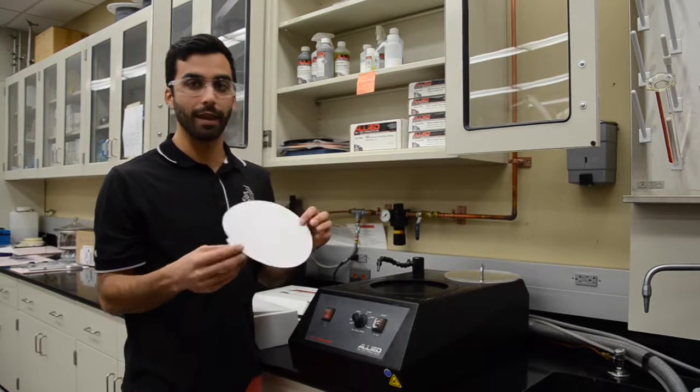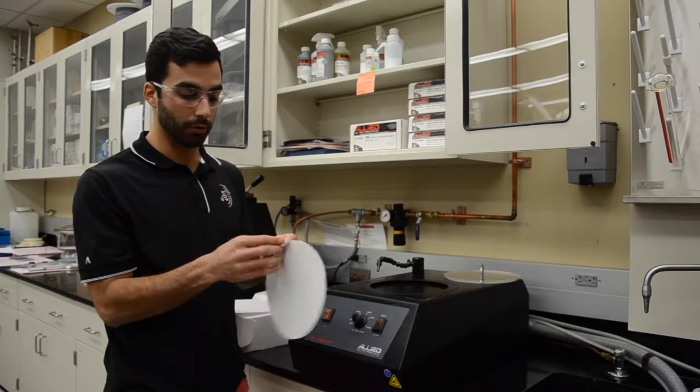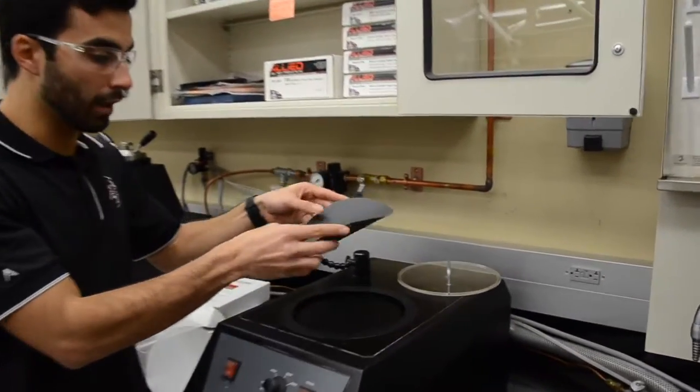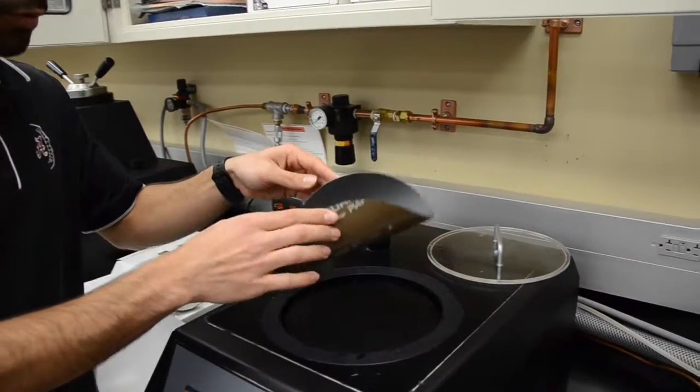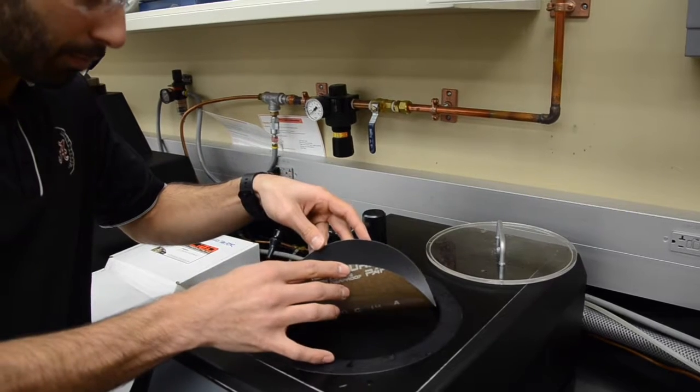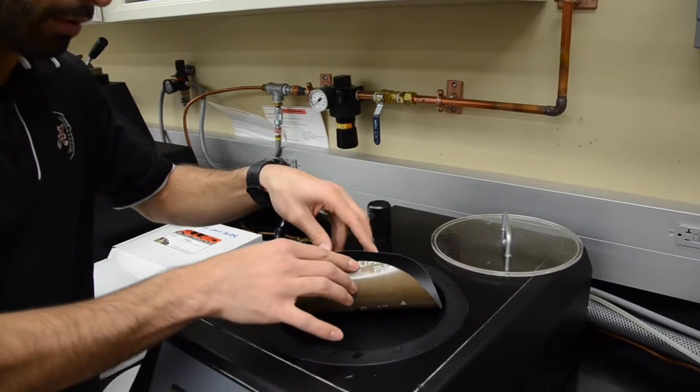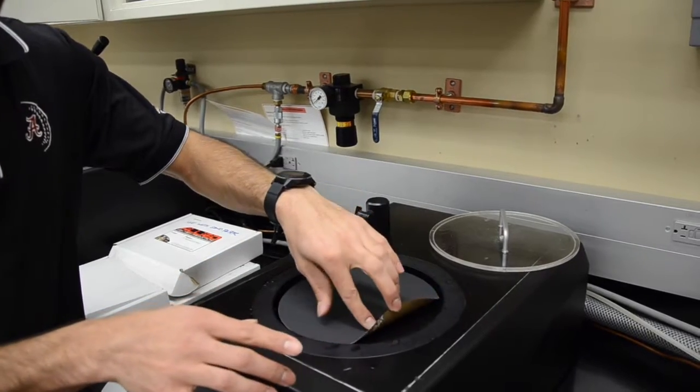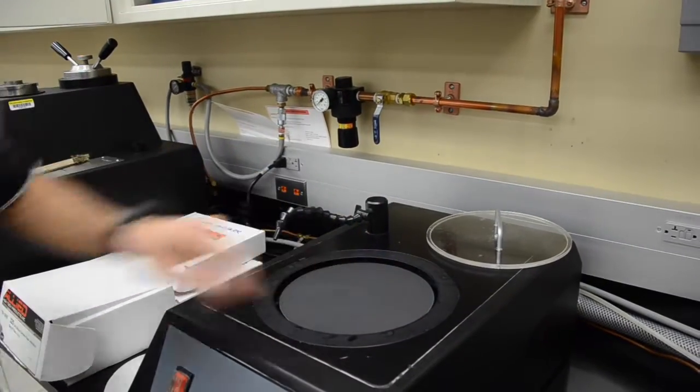Here we have the pad. It's an adhesive back of sandpaper, so you just peel the back. To put it on the platen, to avoid air bubbles, you want to basically bend it like a taco. Put it down and then slowly place it down. That way we try to avoid the air bubbles in between them.